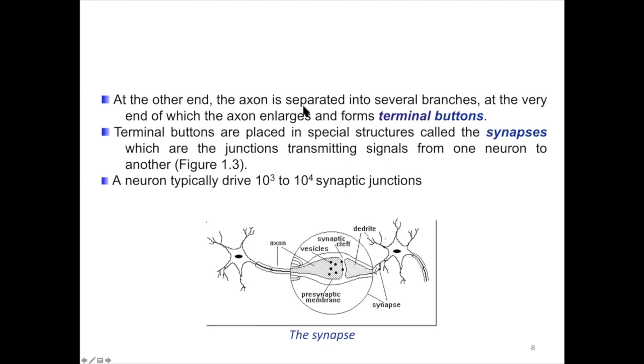At the other end, the axon is separated into several branches, at the very end of which the axon enlarges and forms terminal buttons. This part is called terminal button for an axon end.